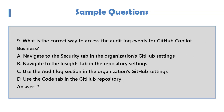Question 9: What is the correct way to access the audit log events for GitHub Copilot Business? A. Navigate to the security tab in the organization's GitHub settings. B. Navigate to the insights tab in the repository settings. C. Use the audit log section in the organization's GitHub settings. D. Use the code tab in the GitHub repository.